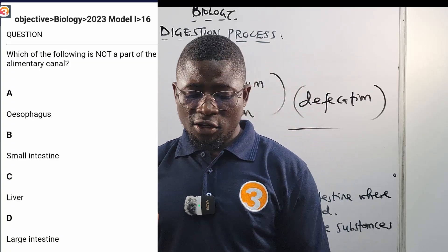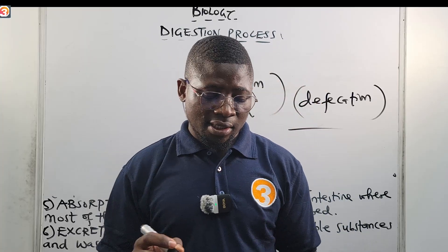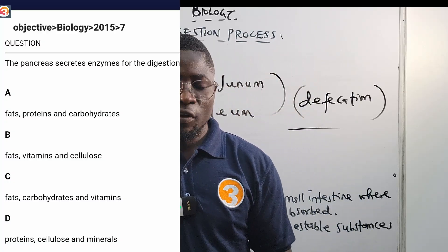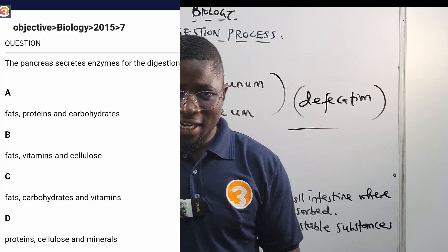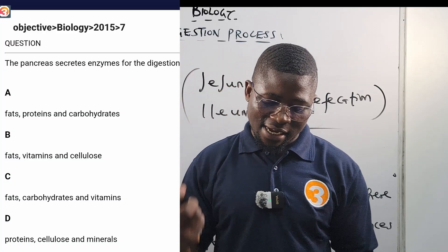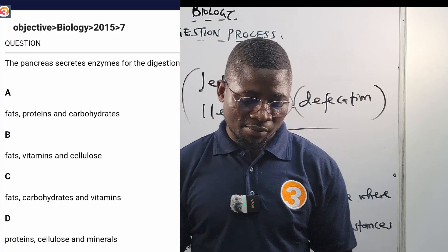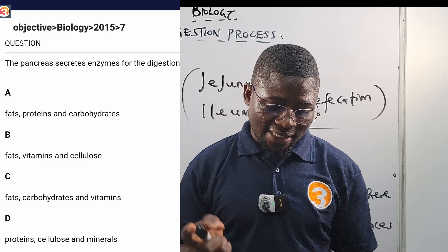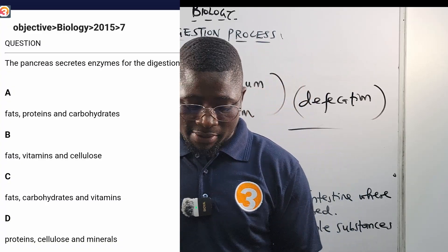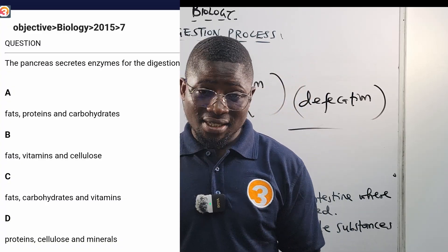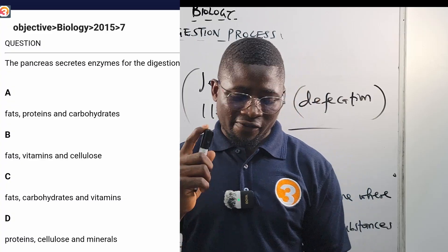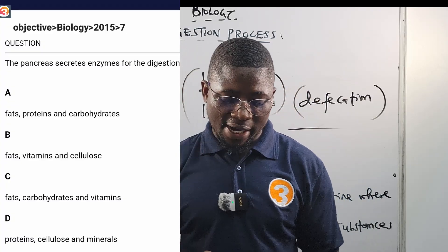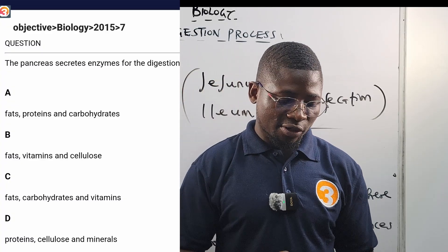For 2015 number 7: the pancreas secretes enzymes for the digestion of fat, protein, and carbohydrates — not fat, vitamins and cellulose; not fat, carbohydrate and vitamins; not protein, cellulose and minerals. The correct answer is fat, proteins, and carbohydrates. Take note of that.